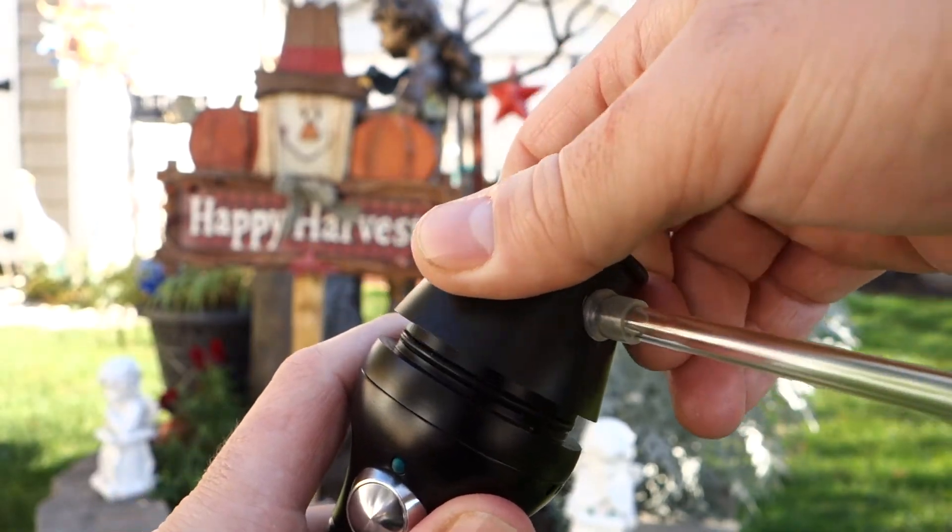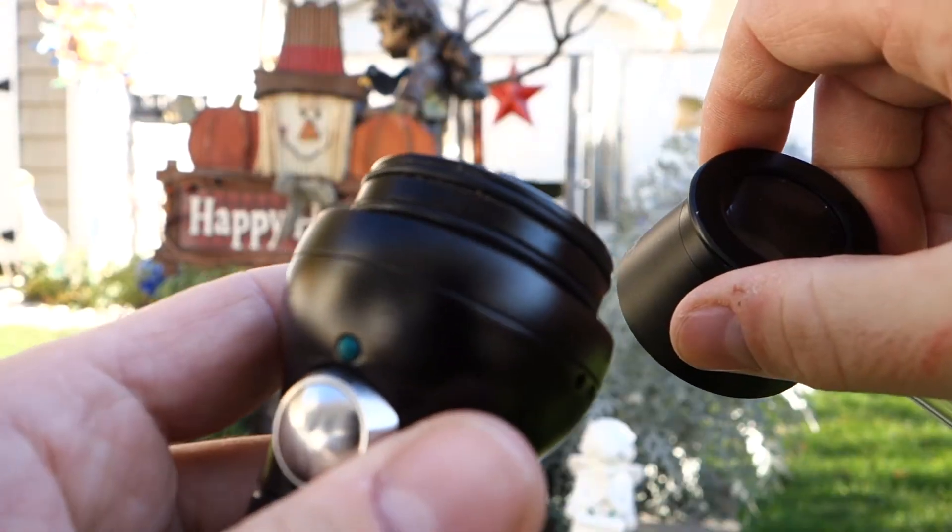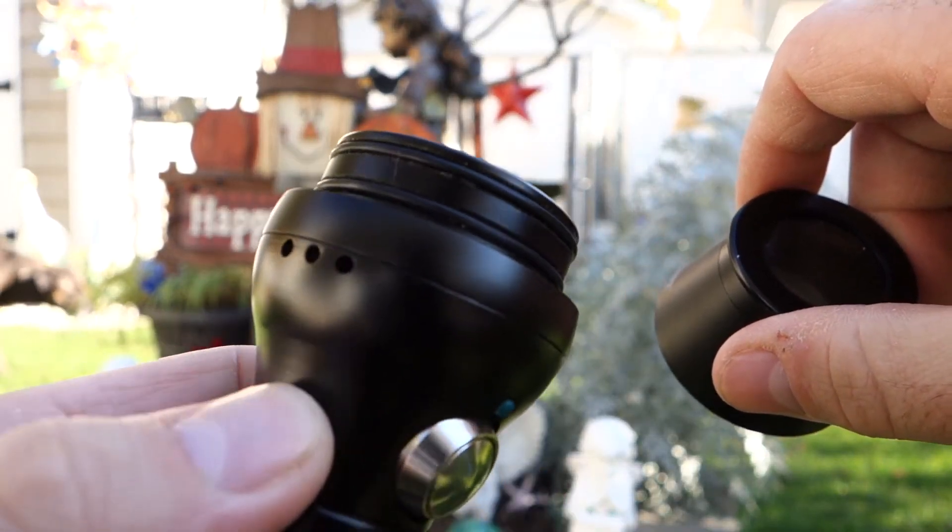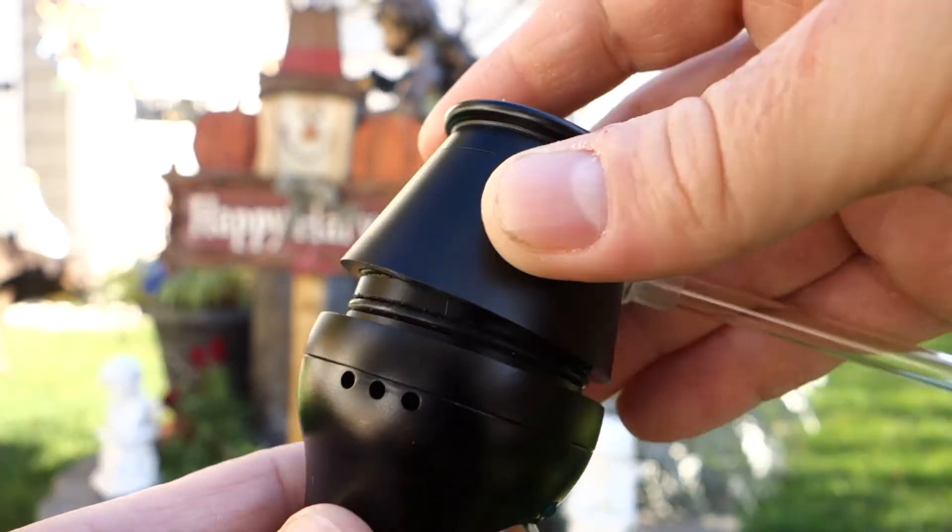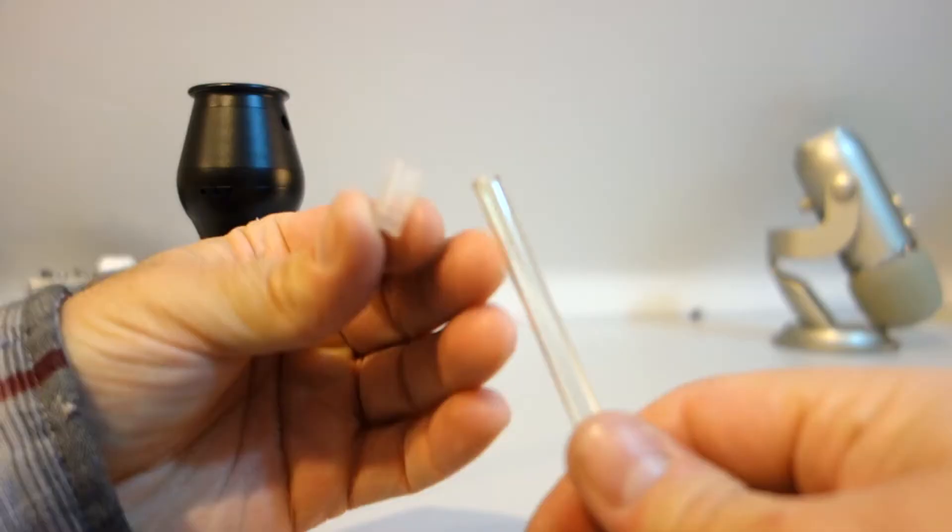To load your material, you would start by simply lifting the top portion off. Two circular rings keep the top piece connected to the lower half. The connection is quite snug so you don't have to worry about the top piece accidentally falling off while vaporizing. When loading in your material, I recommend that you fill the bowl about two thirds of the way for best results.